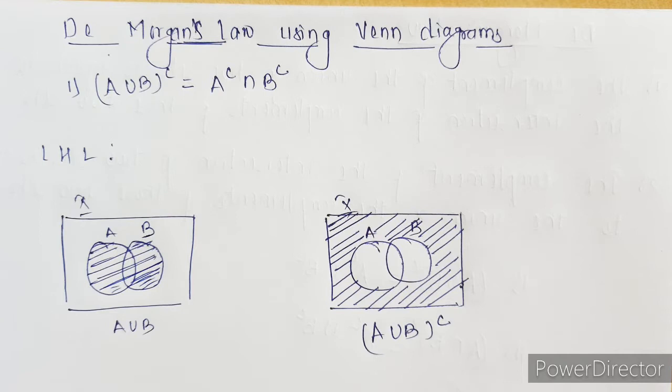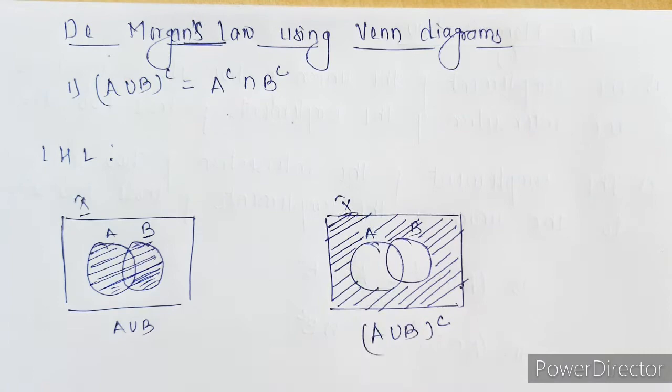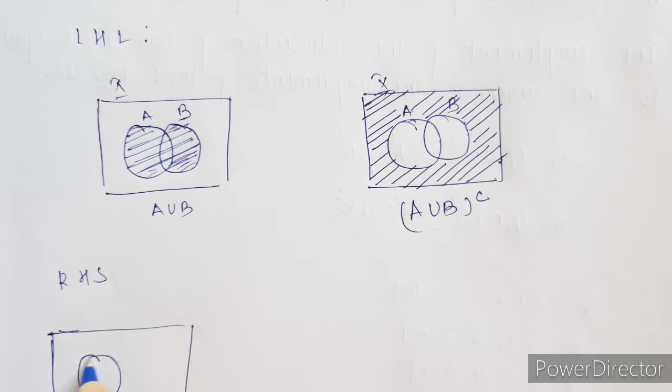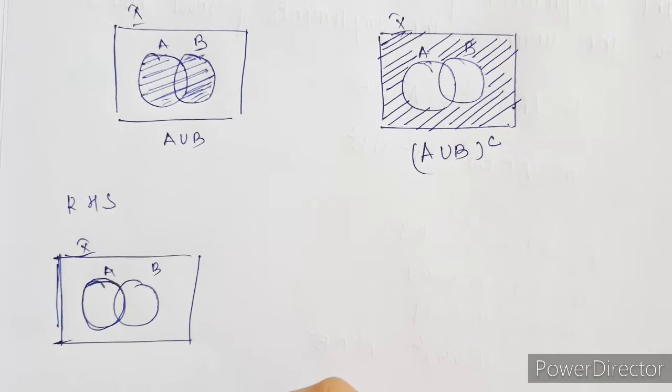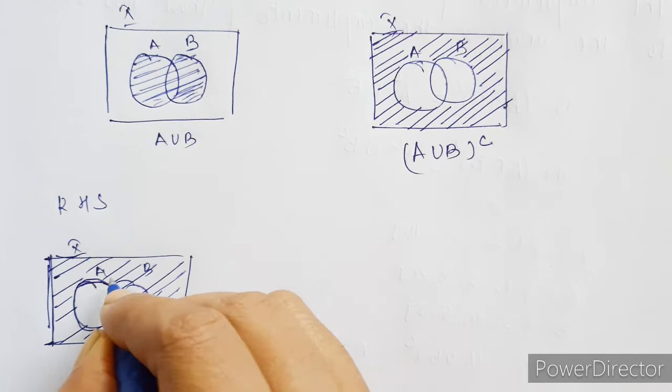Now let's move on to the right hand side. We have to find A complement intersection B complement. So let's first find what A complement and B complement are. For A complement: draw set A, set B, and the universal set. Everything outside circle A is going to be A complement — everything other than A.